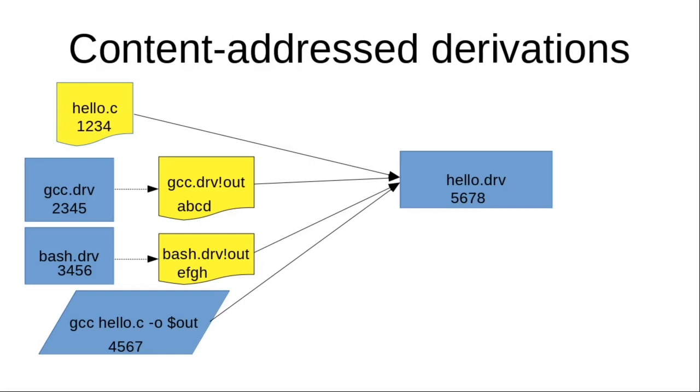What happens is that Nix is first going to build gcc. This is going to yield some output path, and then Nix is going to hash the content of that output path, and this will be the hash of the output path—this abcd hash you can see. Likewise, Nix is going to build bash and hash the output path of bash. These two hashes are what's going to be fed into the Nix hashing process for hello.drv, rather than the hash of the gcc and bash derivations themselves.